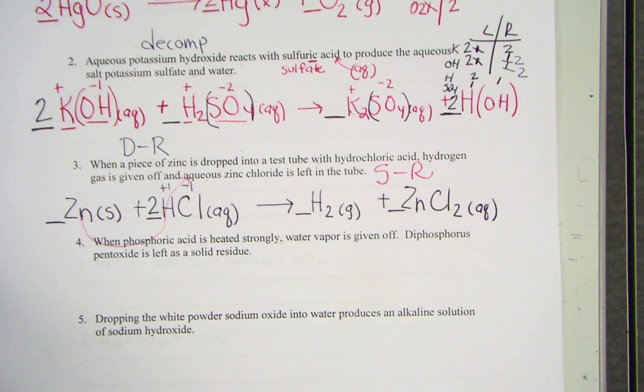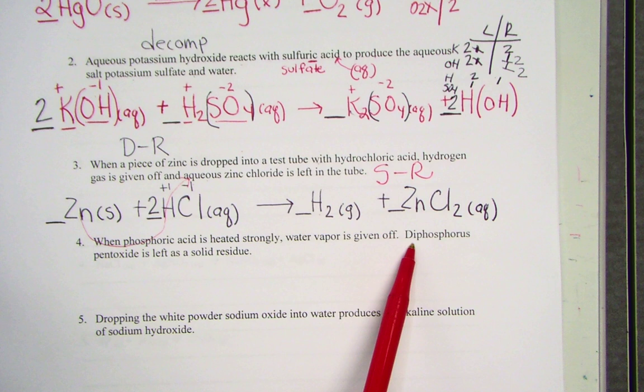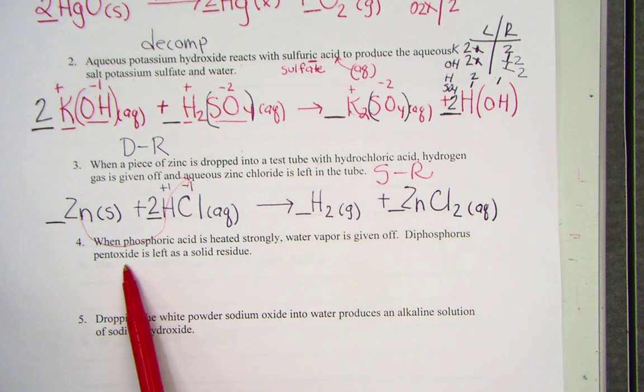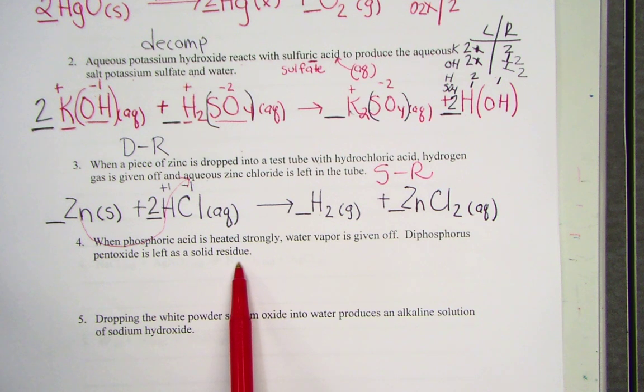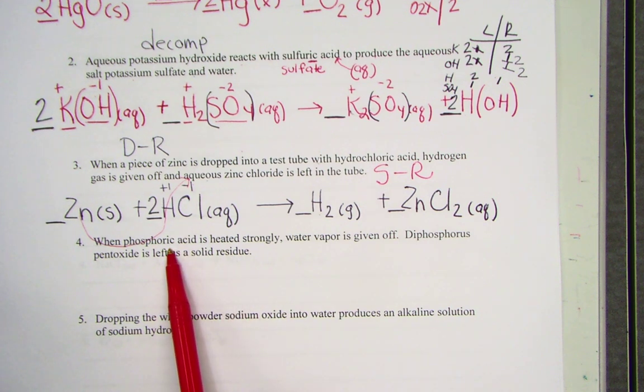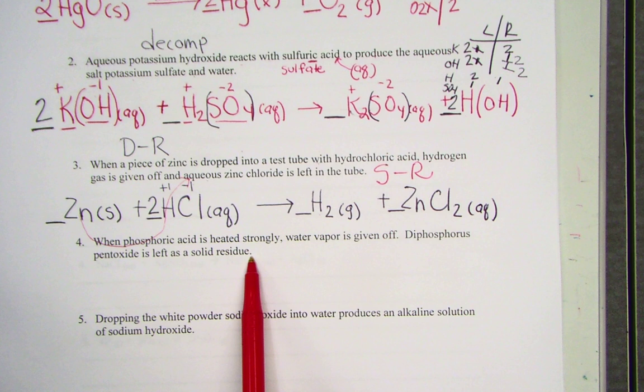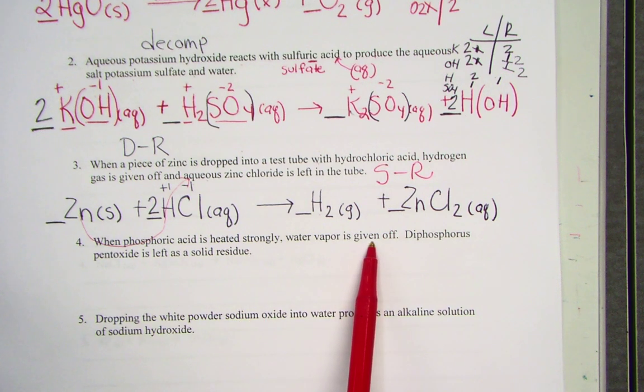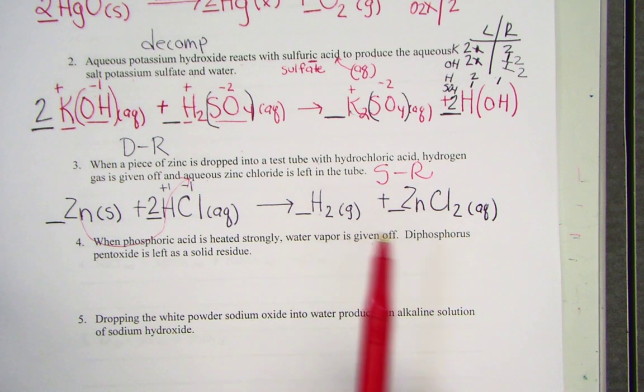We'll read our fourth example. When phosphoric acid is heated strongly, water vapor is given off. Diphosphorus pentaoxide is left as a solid residue. I'm heating an acid, giving off two products. Given off is indicating that it will be on the right side of our arrow as a product.